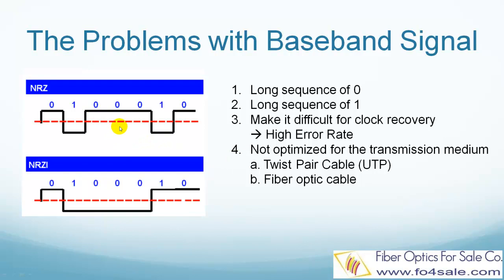There is not enough transitions, which means the jumping from 0 to 1 and from 1 to 0. Transitions are very important for the receiver to correctly recover the data clock. Without a correct clock, you will get a very high error rate. Another problem is that the baseband data is not optimized for the transmission medium. The transmission medium may be UTP copper cable or fiber optic cable. So that means we should not directly transmit the baseband data to the line.